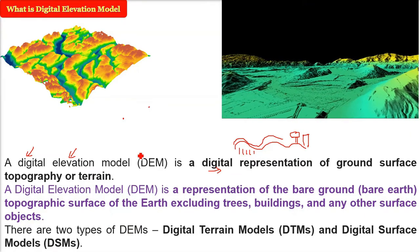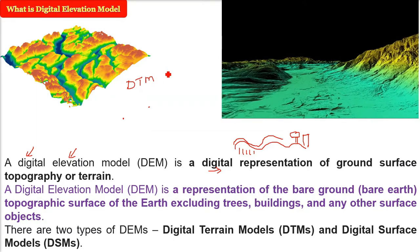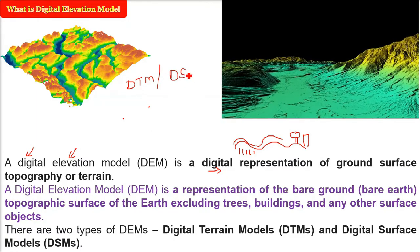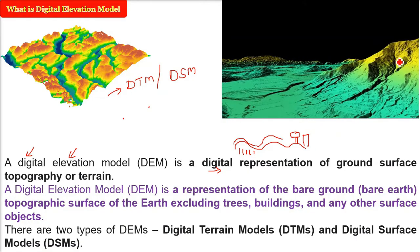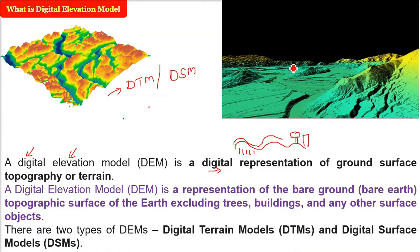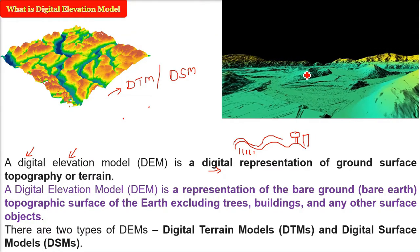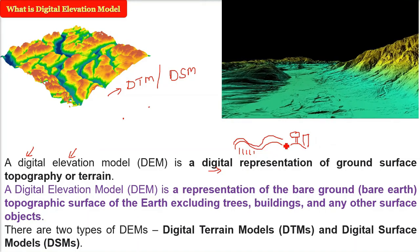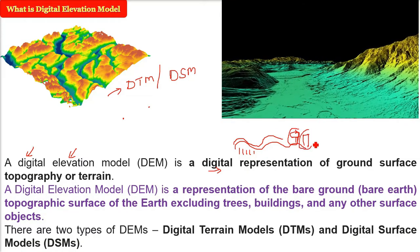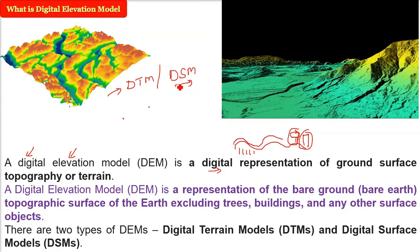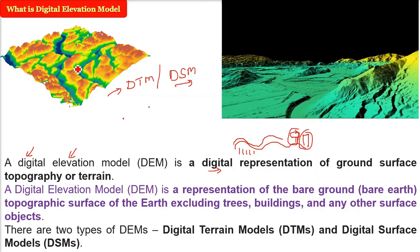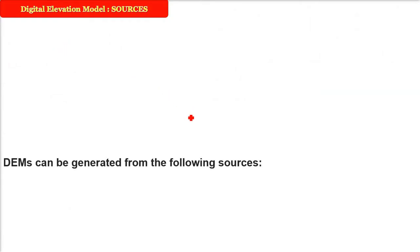The bare ground topographic surface of the earth excludes everything like trees, buildings, or any other object. There are two types of DEMs: one is the Digital Terrain Model (DTM) and one is the Digital Surface Model (DSM). Normally people call DEM as DTM because DTM is all about the topography — the bare earth. But when we include trees, buildings, and actual objects, combining topography with those objects, that is called the Digital Surface Model.